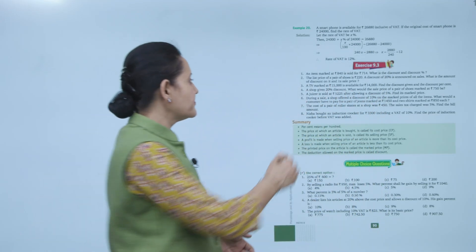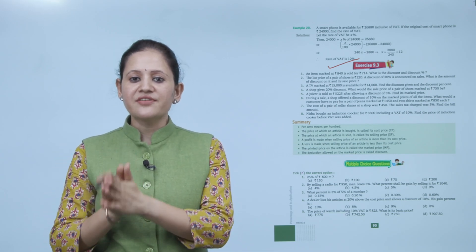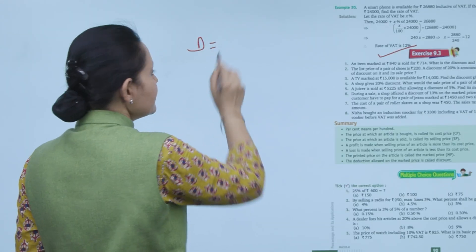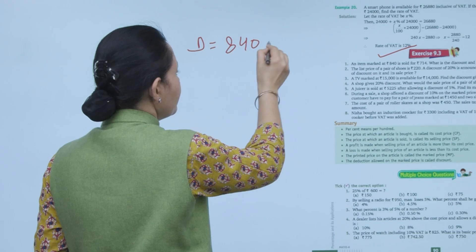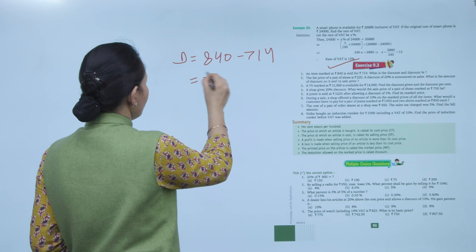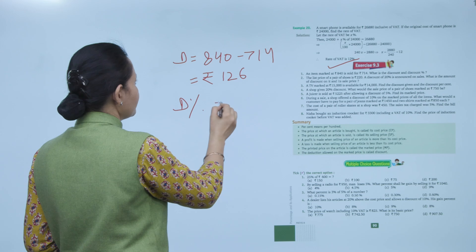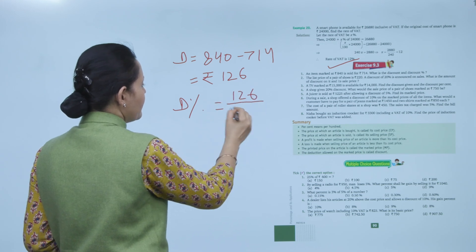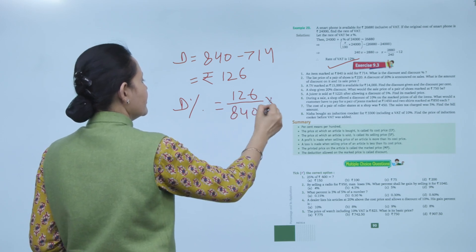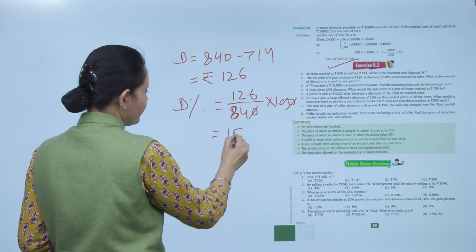Next is Exercise 9.3. An item marked at Rs. 840 is sold for Rs. 714. Discount = 840 − 714 = Rs. 126. Discount% = (126/840) × 100 = 15%.